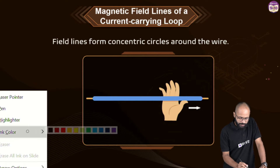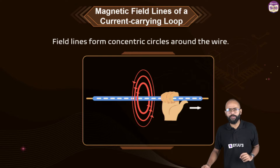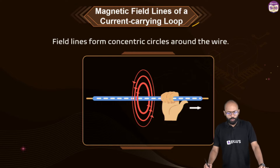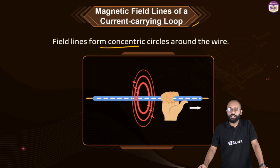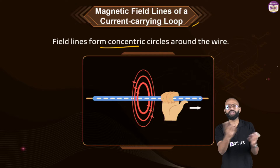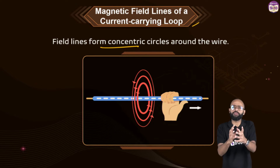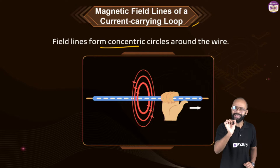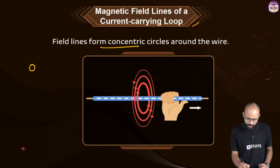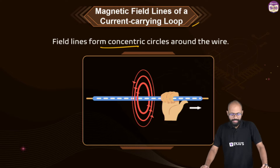We've also studied magnetic field lines of a current-carrying loop. Field lines form concentric circles around the wire — if there is a wire carrying current, around it you will see concentric circles. Concentric means many circles with growing radius but the same center. That is the magnetic field line around a current-carrying wire.